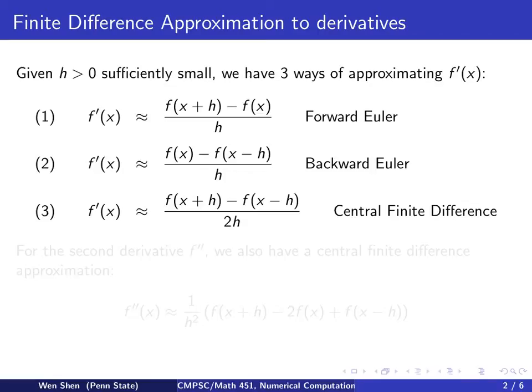The second method is very similar in spirit to the first one, except that now we gather information backward. We take f of x and subtract its value evaluated at x minus h — a little bit to the left, smaller values of x — and then the difference is divided by h. That's the backward Euler method.